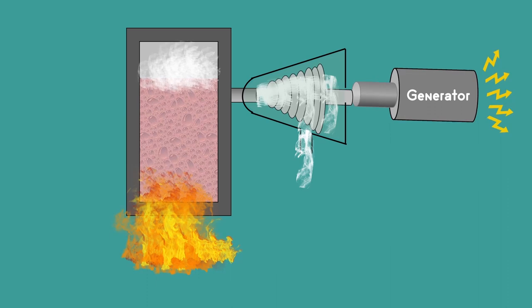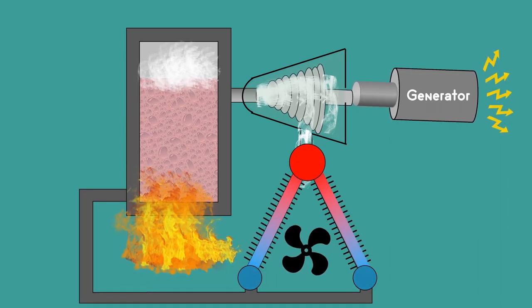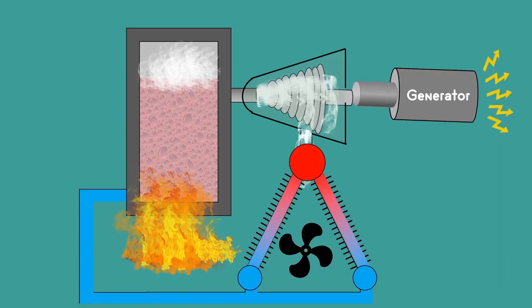Here the exhaust steam from the turbine is allowed to flow through external fin tubes. The cold air blowing against the tubes condenses the steam.